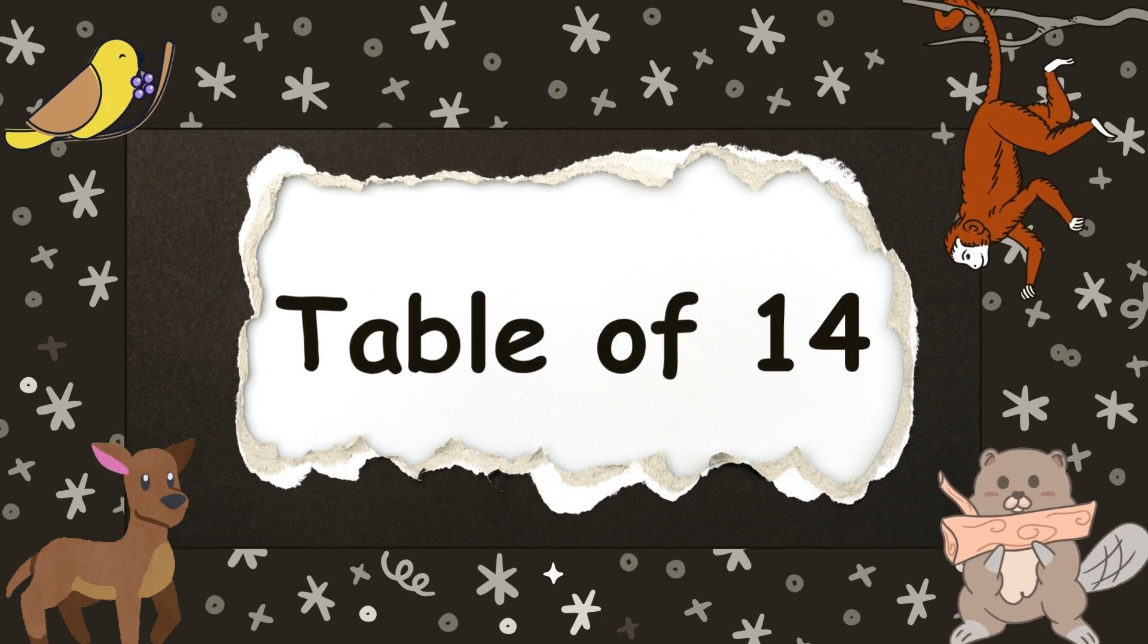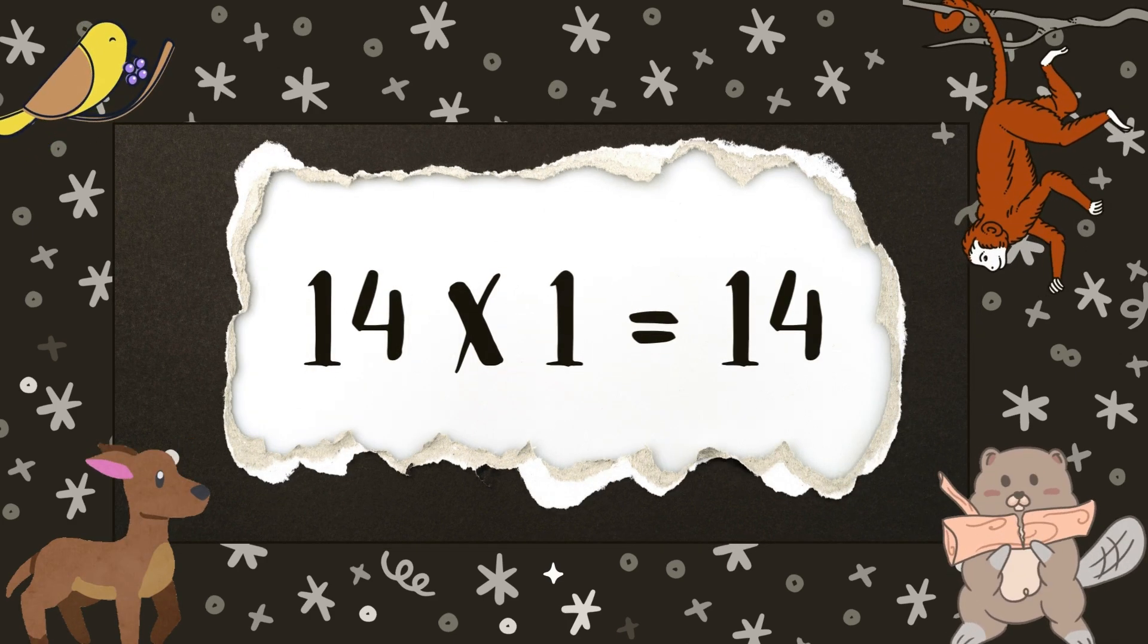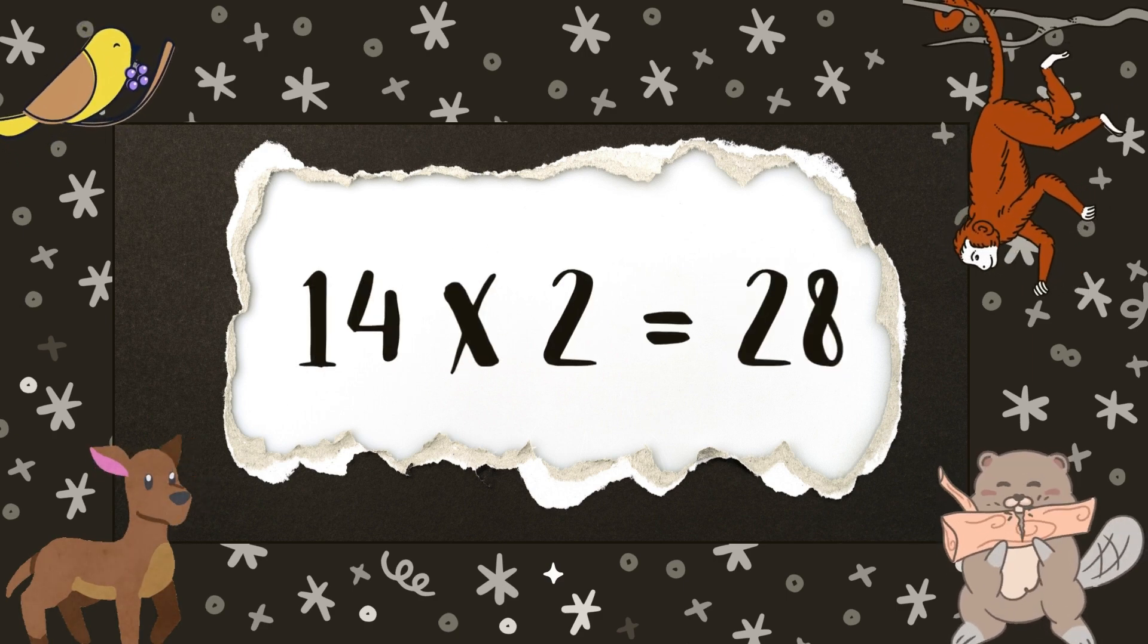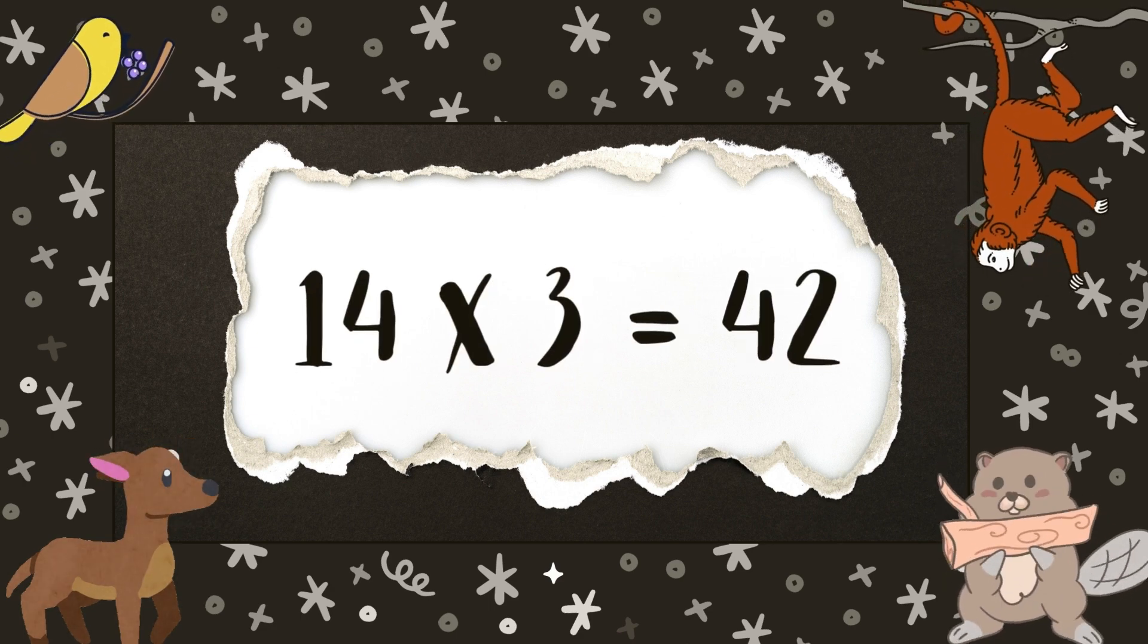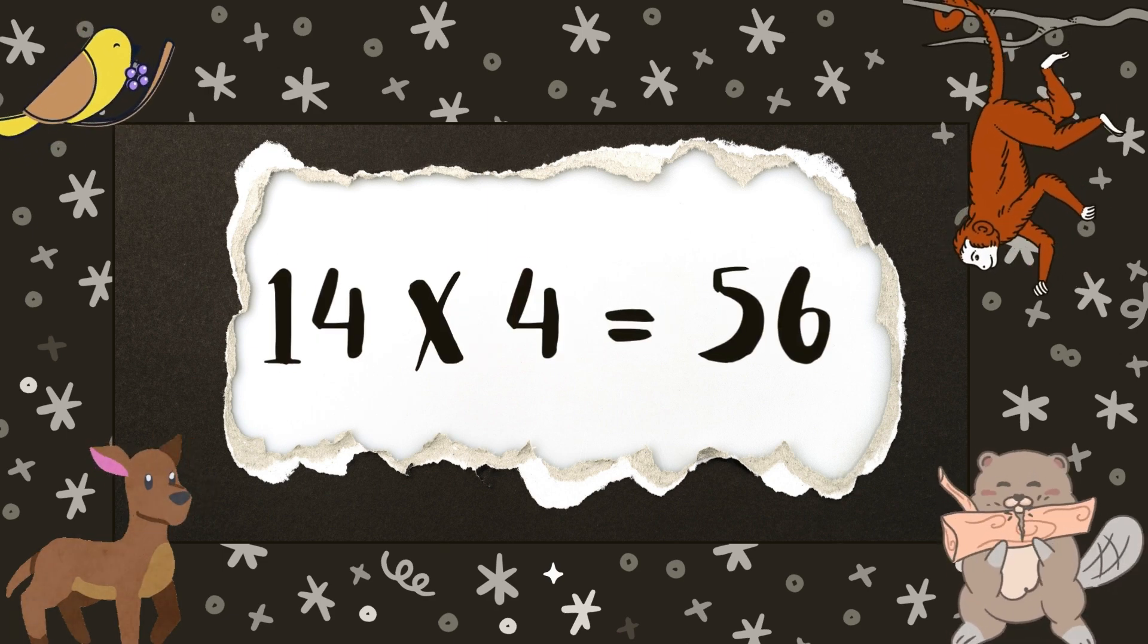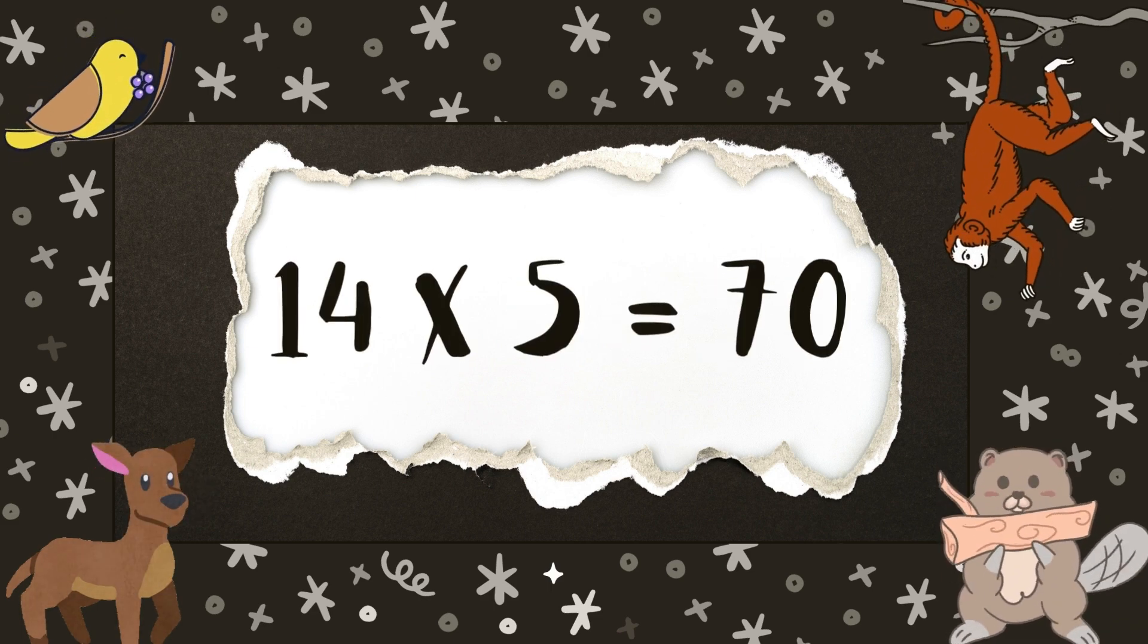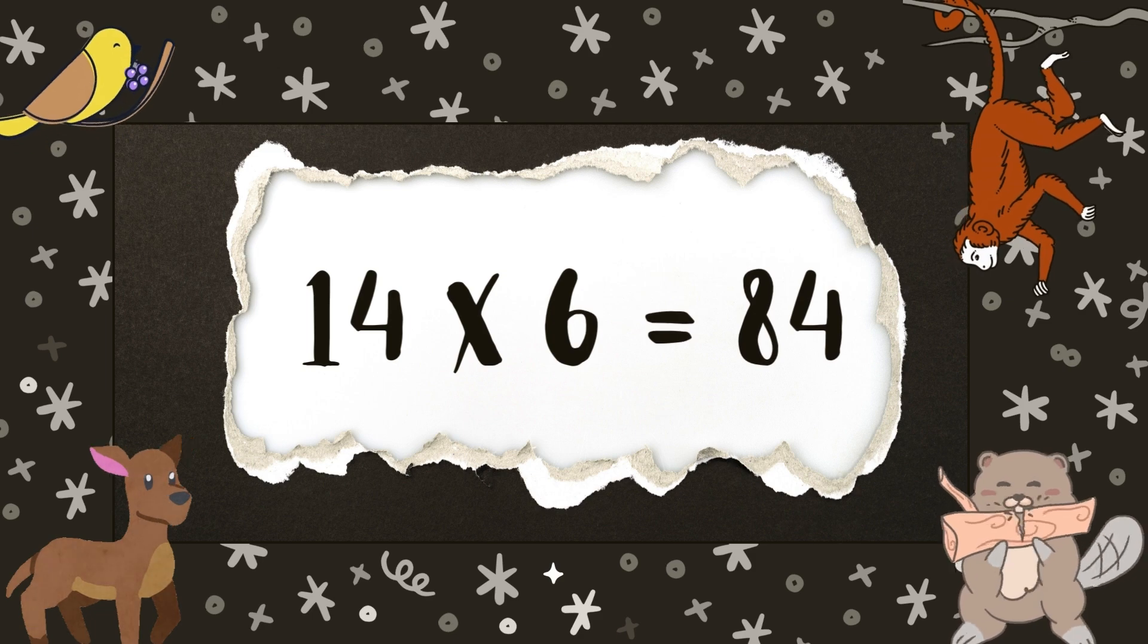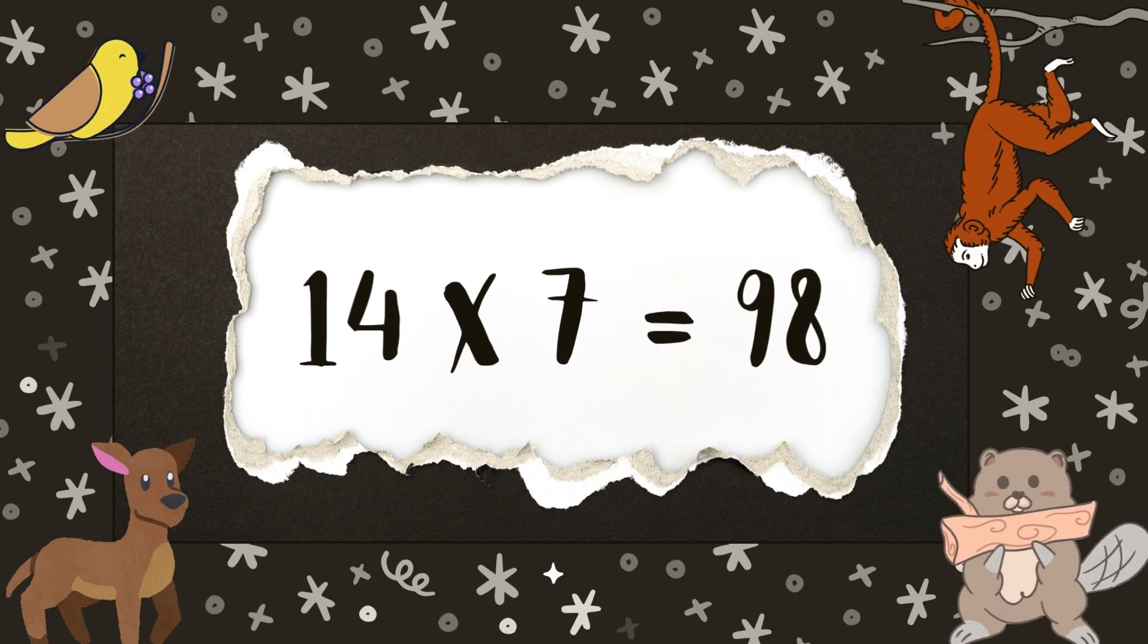Table of 14. 14 1s are 14, 14 2s are 28, 14 3s are 42, 14 4s are 56, 14 5s are 70, 14 6s are 84, 14 7s are 98.